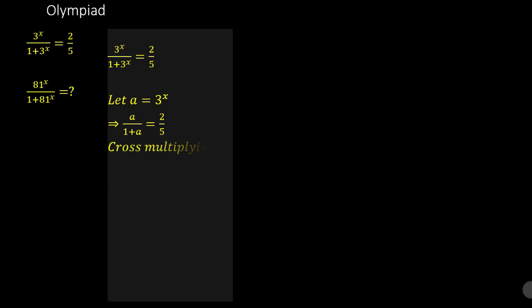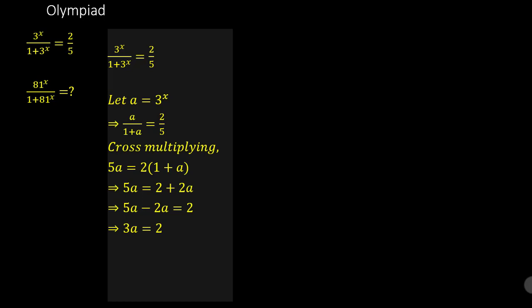When you cross multiply, you have 5a is equal to 2 times 1 plus a. When we expand the right-hand side, we have 5a is equal to 2 plus 2a. Grouping like terms, we have 5a minus 2a is equal to 2, which simplifies to 3a is equal to 2. Dividing both sides by 3, we come up with a is equal to 2 over 3.